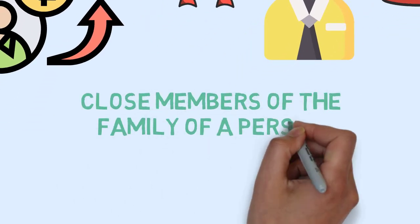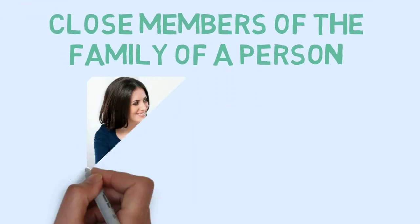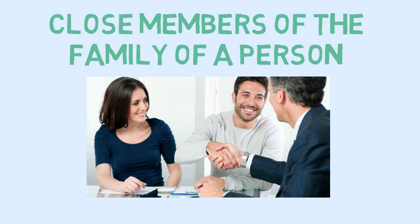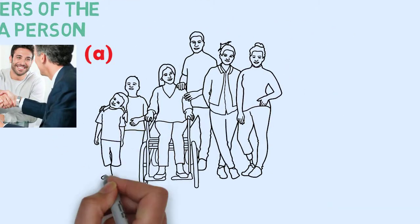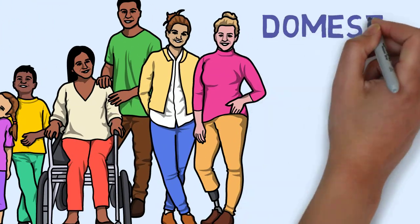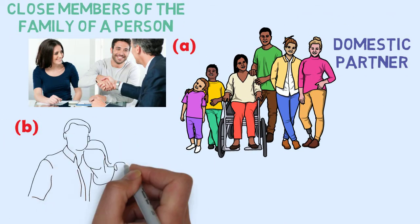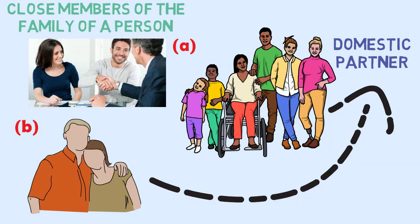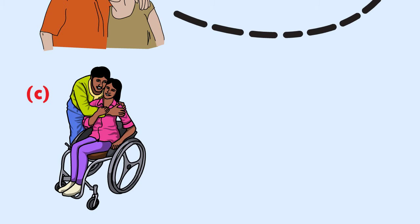Close members of the family of a person are those family members who may be expected to influence or be influenced by that person in their dealings with the entity. These include: A, the person's children and spouse or domestic partner; B, the children of that person's spouse or domestic partner; C, the dependents of that person or that person's spouse or domestic partner.